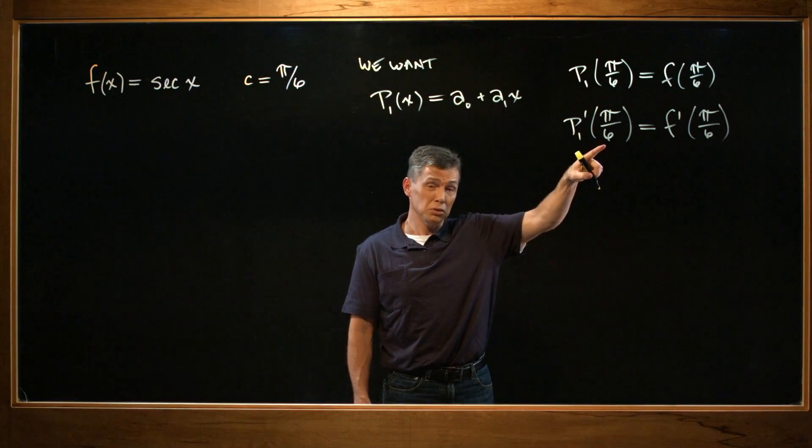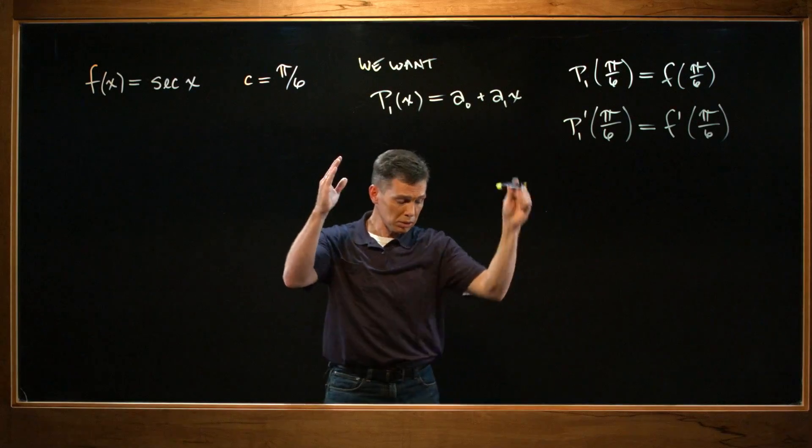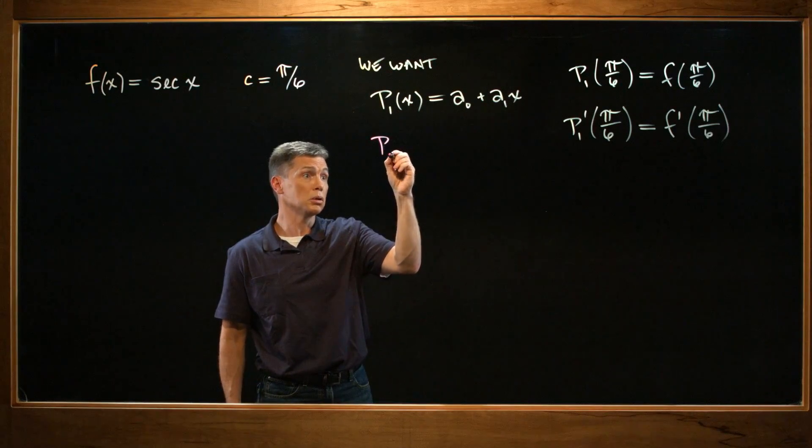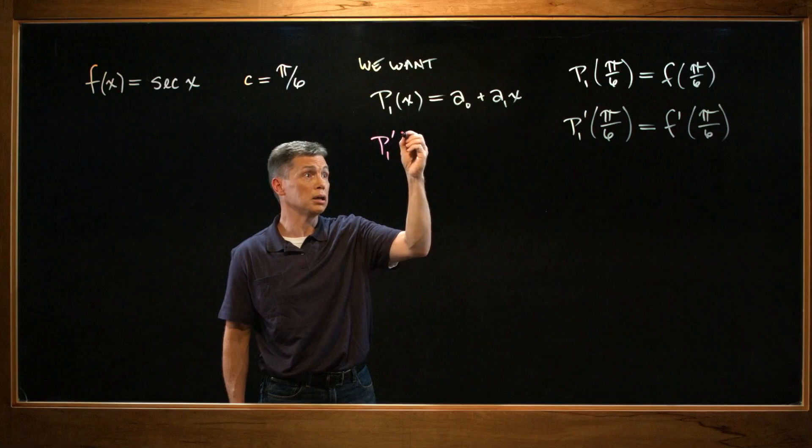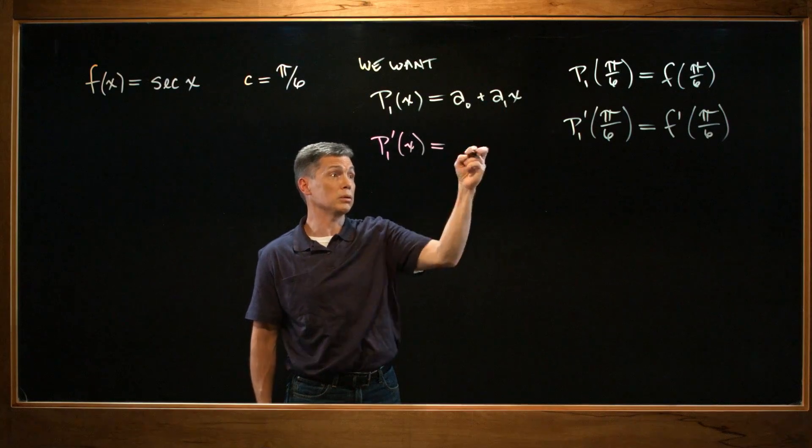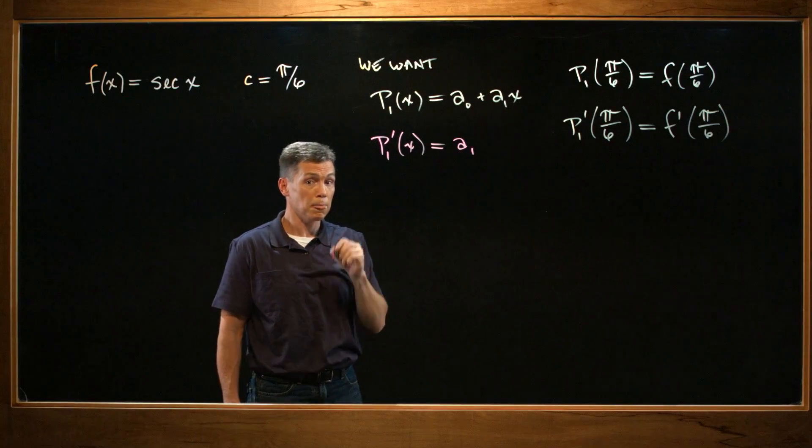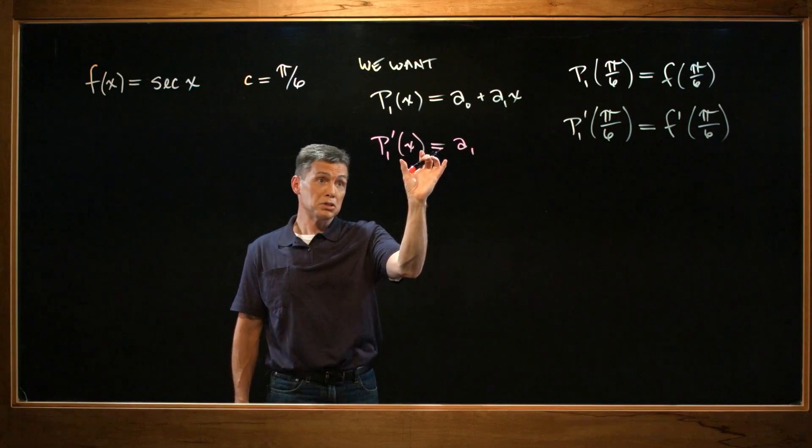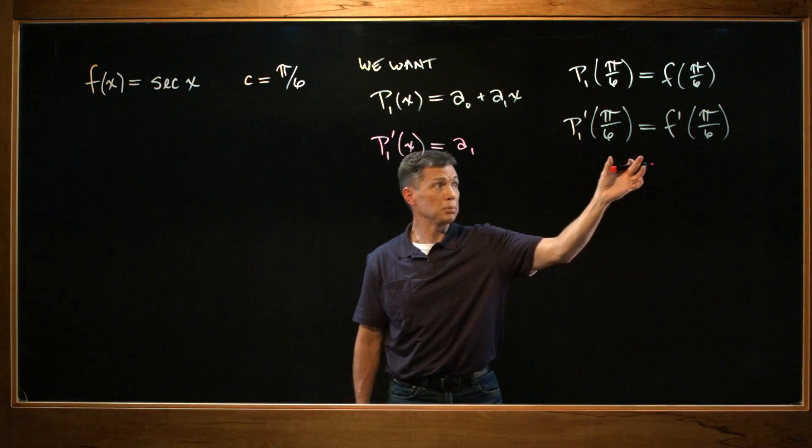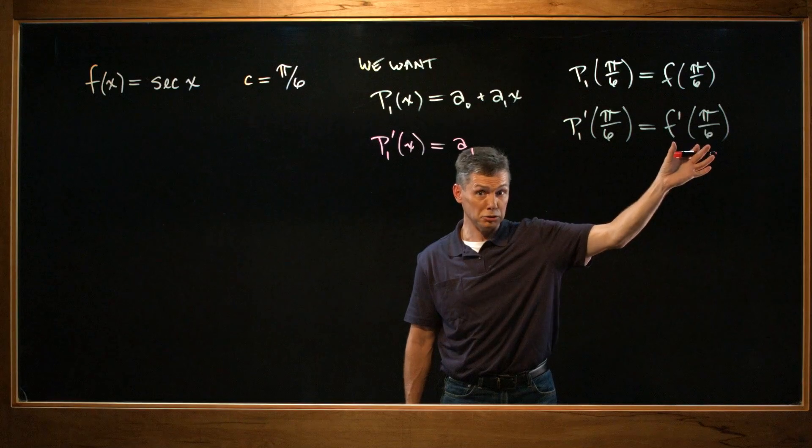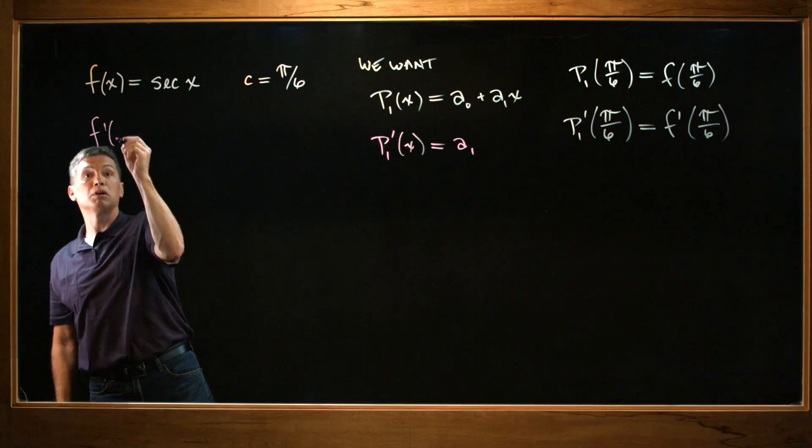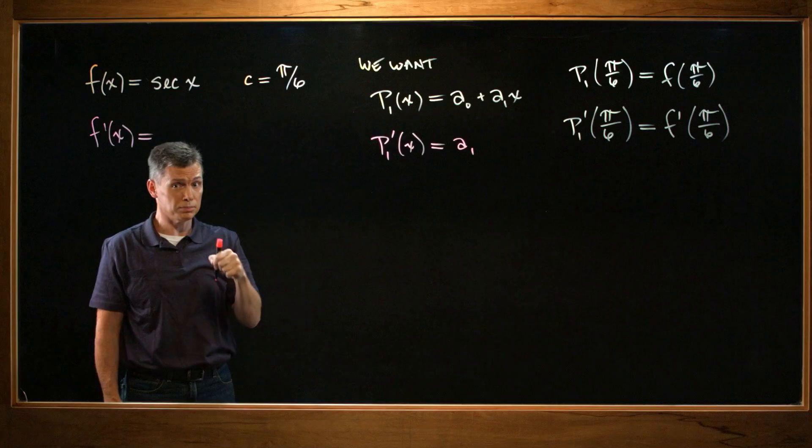Let's actually start with the second of those two statements. I'm going to do that because take a look at what happens when we differentiate this P₁ function. Even though we don't know what those values of a are, P'(x) equals, that's a constant, so it's gone. And this is a coefficient times x to the 1 power, so all you get is a₁. That's good, because now I have an expression for my first derivative. It just equals a₁, and I know that that first derivative is supposed to end up equaling f'(π/6).